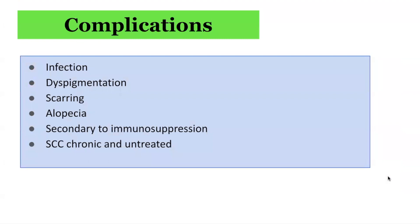In terms of potential complications of Pemphigus foliaceus, even though it has a benign prognosis in most instances, it may be associated with infection, dyspigmentation, longer-term scarring, alopecia, as well as some reports of squamous cell carcinoma in chronic and untreated skin areas affected by Pemphigus foliaceus.